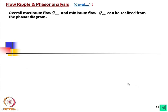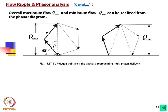Overall maximum flow q_max and minimum flow q_min can be realized from the phasor diagram. For five pistons, the phasors are separated by 2π/5. The maximum diagonal height of the resulting polygon represents maximum flow, and the minimum height represents minimum flow.